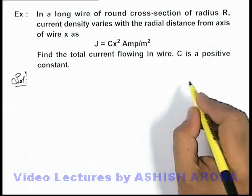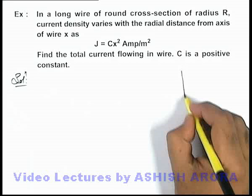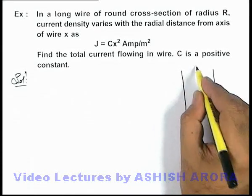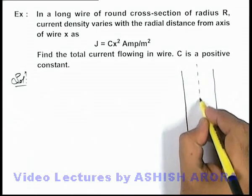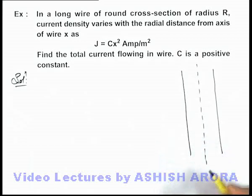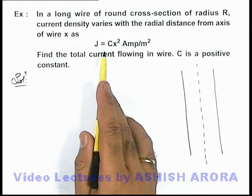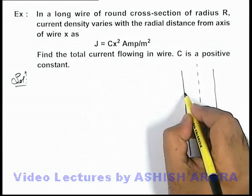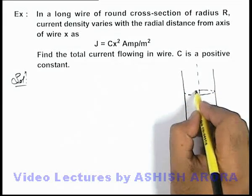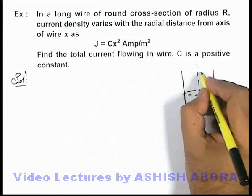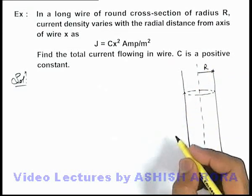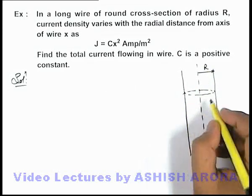In this situation, if we draw the physical setup, we can see this is a long cylinder and this is the central axis of the cylinder. We are given that current density is varying with the distance x, on its circular cross-section of the wire which is of radius r, and we are required to find the total current.